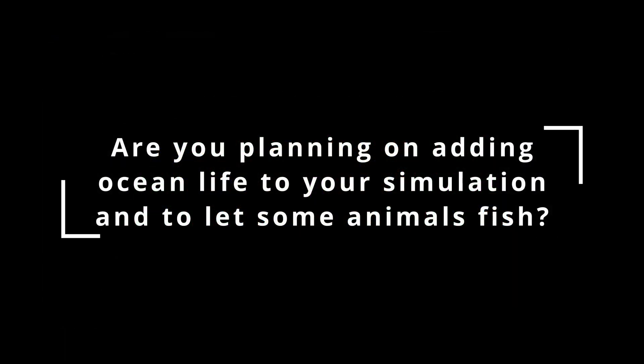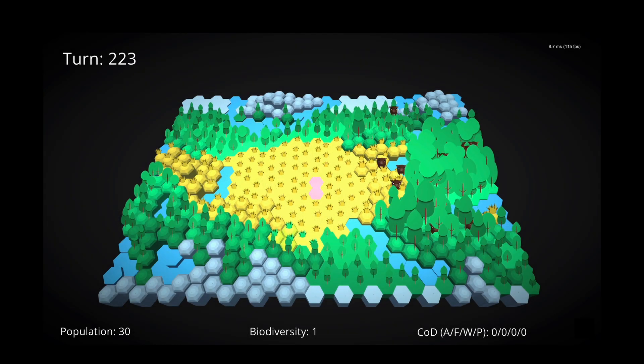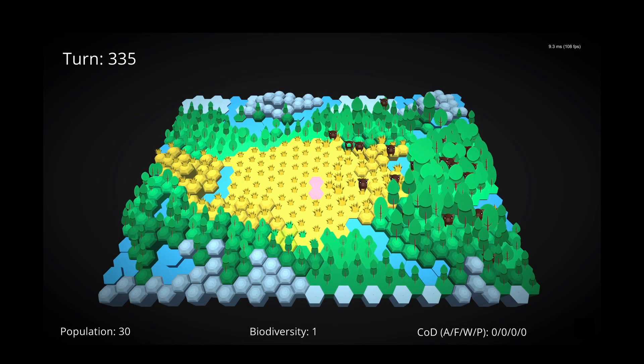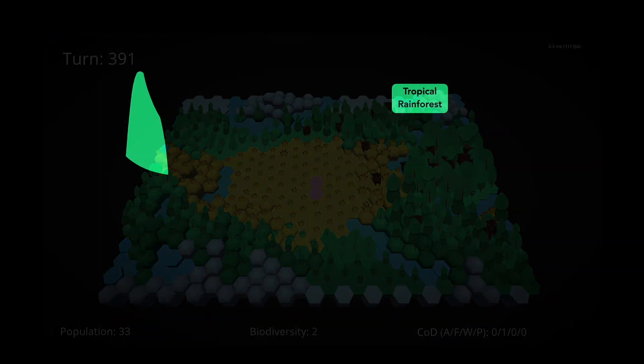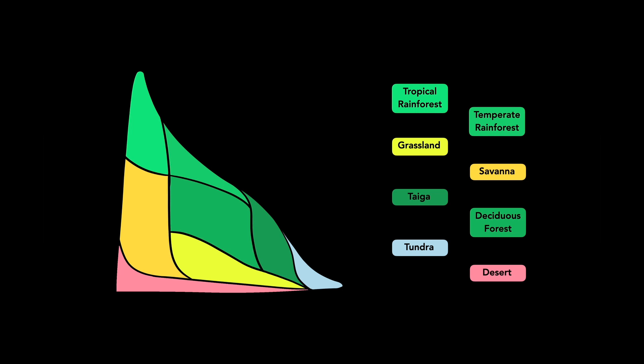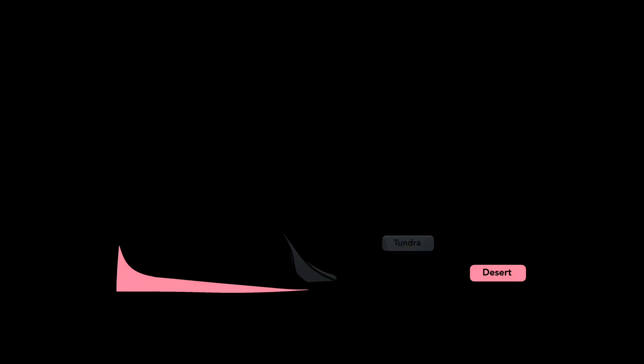Are you planning to add ocean life to your simulation and to let some animals fish? Yes, aquatic life is on the to-do list, but it's quite a big update. I'll need to design a system that supports aquatic biomes. We're currently using the Whitaker Biome System to calculate biomes for each tile based on temperature and precipitation. This system is great, but it doesn't work for aquatic environments, so I'll need to find something new.